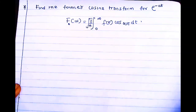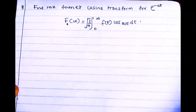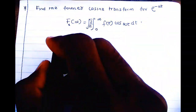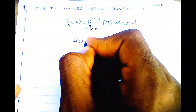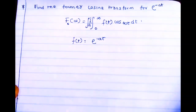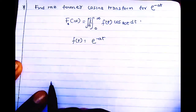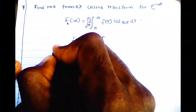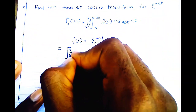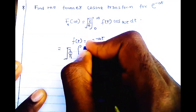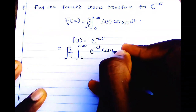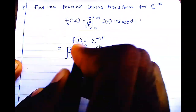We are going to use this formula for finding the cosine transform of e^(-at), where our function f(t) is e^(-at), since that's the function given to us from the question. We put it into the formula, giving us the square root of two over π times the integral from zero to infinity of e^(-at) cos(ωt) dt.